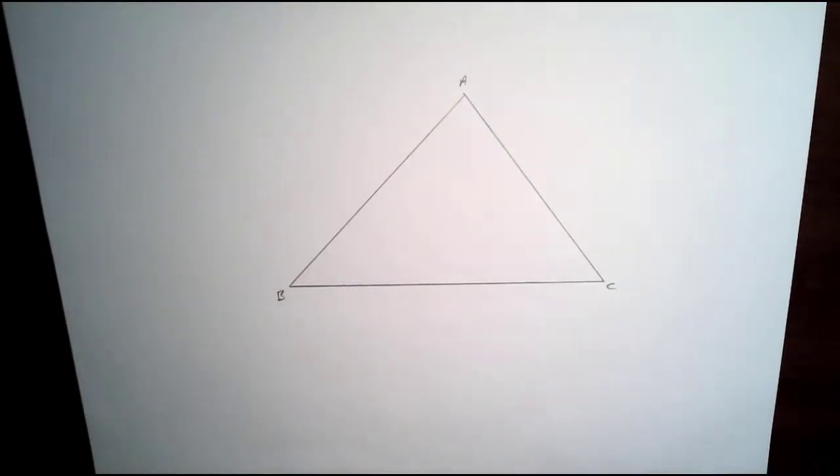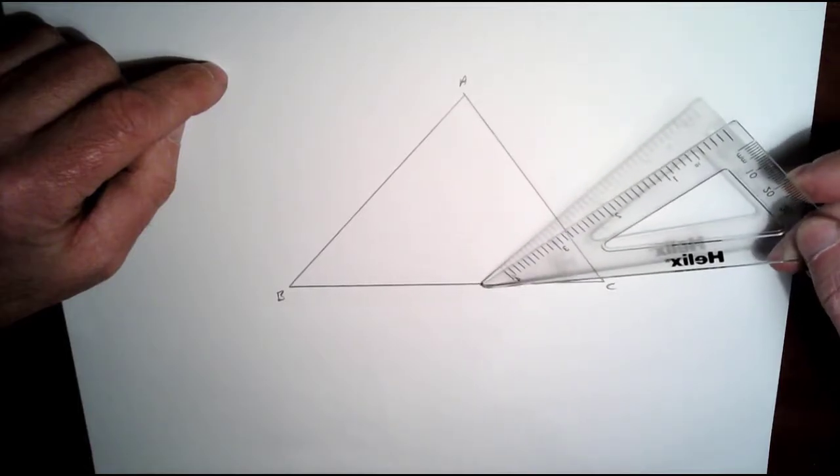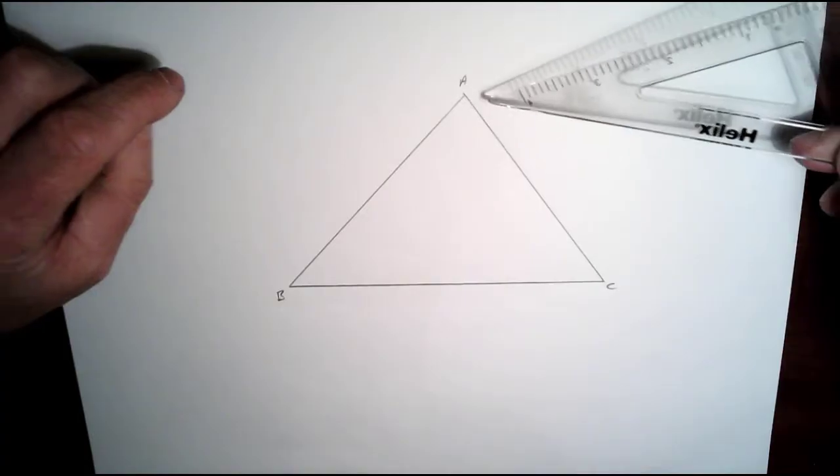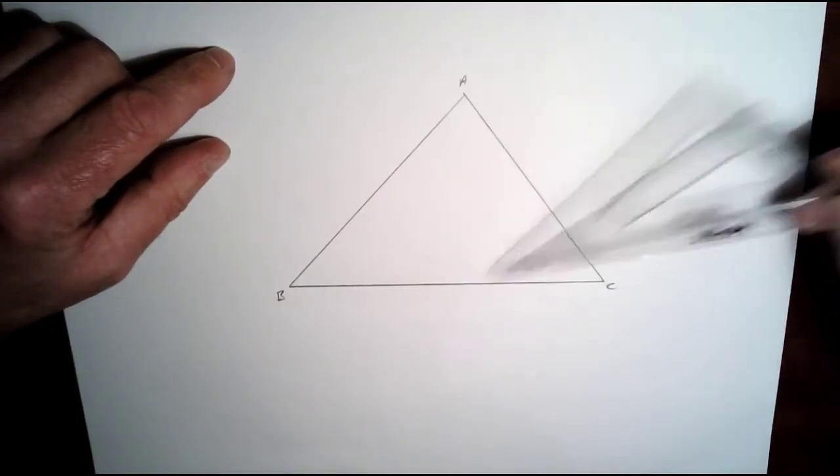In this video we're going to look at constructing the orthocenter of this triangle. In order to construct an orthocenter, we've got to construct two or three altitudes. An altitude is just the distance from a vertex to the opposite edge perpendicular—it's a perpendicular line dropped from, let's say, A down to BC, or from C down to AB, or from B to AC.